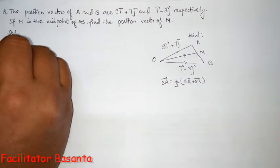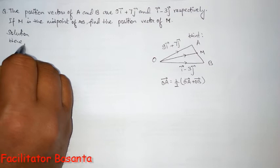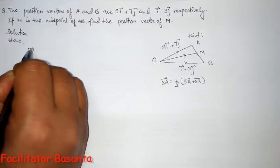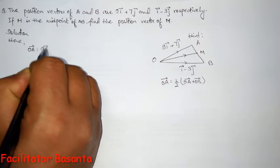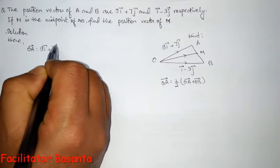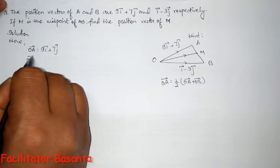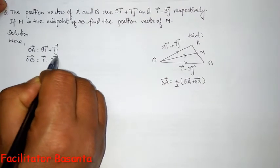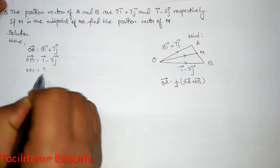Now, solution. Here, the position vector of A, which is OA, equals 9i plus 7j vector. The position vector of B is OB vector equals i vector minus 3j vector. OM equals what?